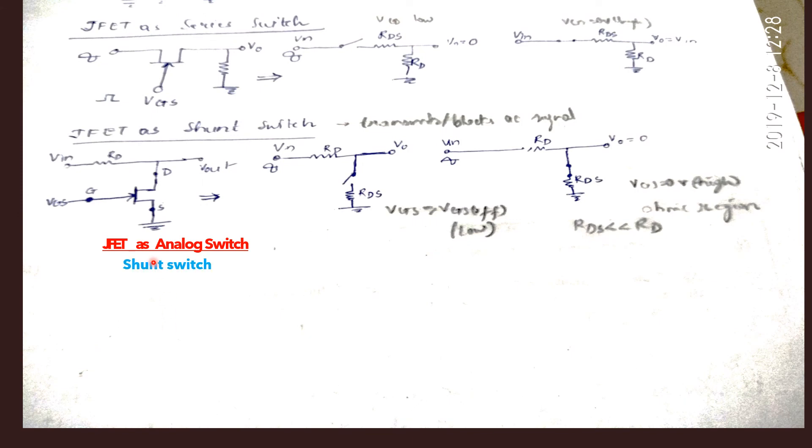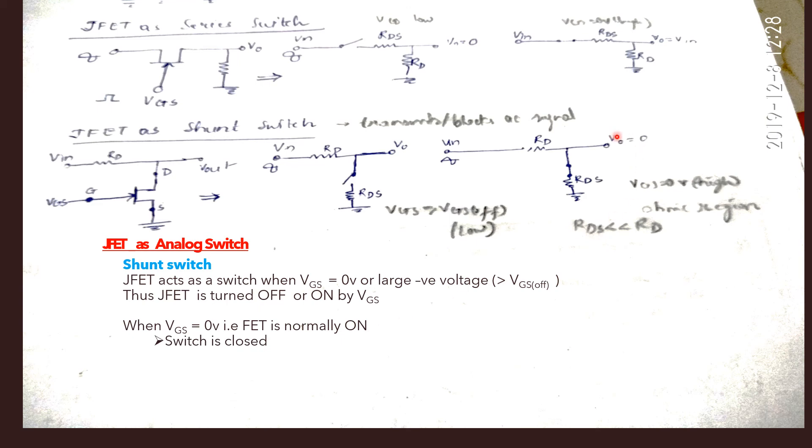Next, we will see the shunt switch. This is the circuit diagram. When VGS is 0 volts, the FET is normally on. The switch is closed. We can understand from this circuit where the FET is shown in the form of a switch. The switch is now closed as VGS is 0 volt. VOUT is much smaller than VIN due to the potential divider. We can say it is almost 0.